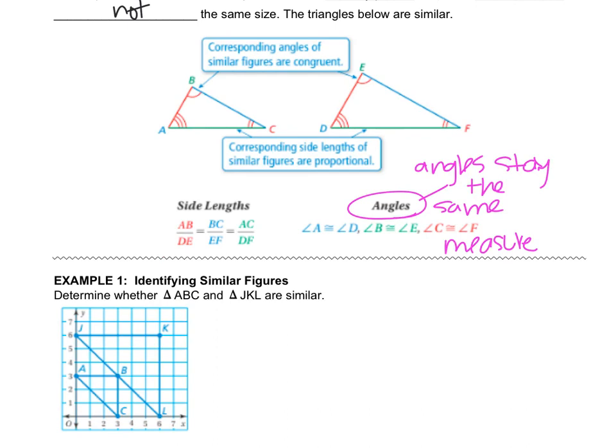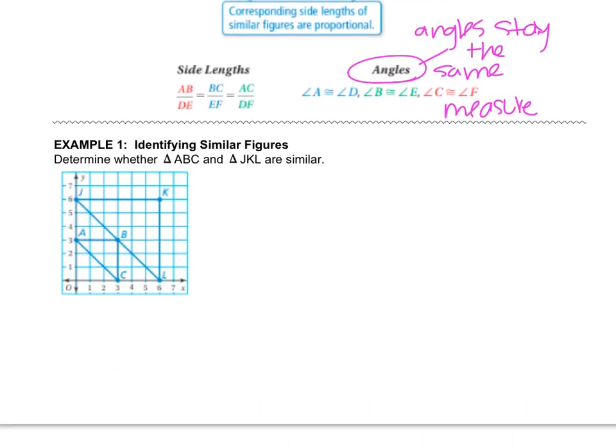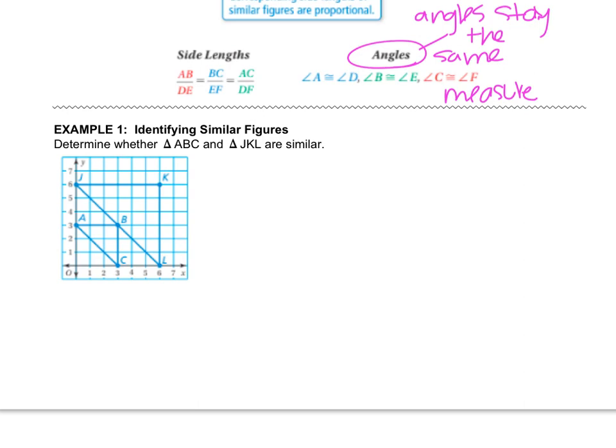Let's look at example one. We have to determine whether the two triangles are similar. So what we're going to do is just look at our coordinates. So the coordinates of A are 0, 3. B is 3, 3, and C is 3, 0.